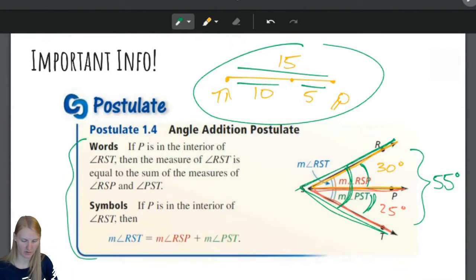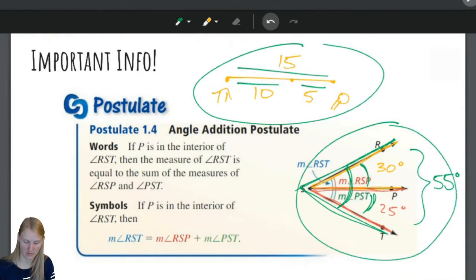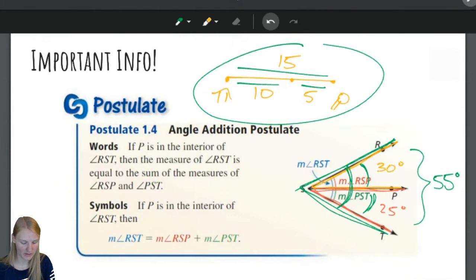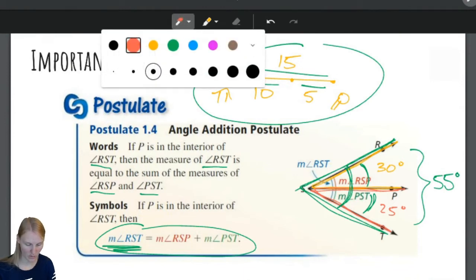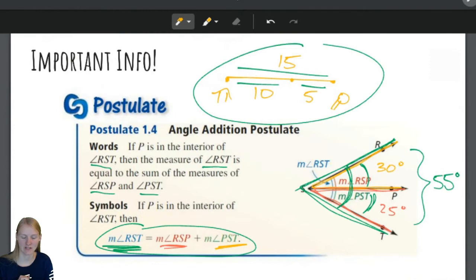This chunk plus this chunk equals the whole chunk. So angle addition postulate is just like the segment addition postulate. So we're going to read it though, give you the words and the symbols and the diagram. Please draw this diagram in your notes. If point P is in the interior of angle RST, then the measure of angle RST is equal to the sum of the measures of RSP and PST. So this is like how we said, as long as this point is in between the two end points, you can use the segment addition postulate. As long as this ray is in between the two rays of your big angle. That's what that means.